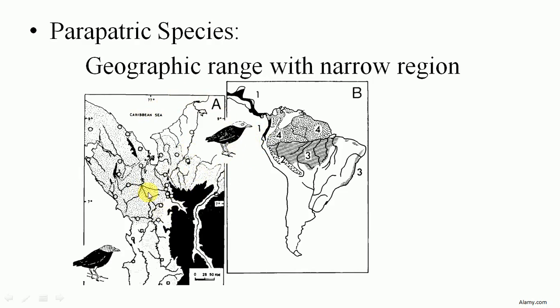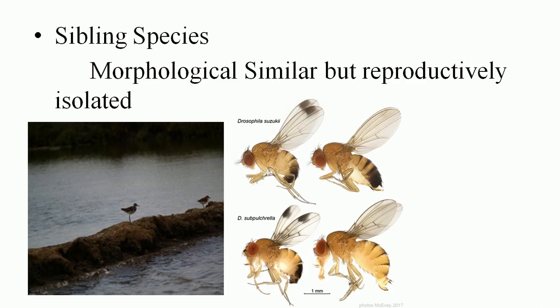For example, you will see one bird with a black spot — this is one species. Another species, the narrow birds, live in a very narrow geographical range area. They develop new species, and that type of species is known as parapatric species.